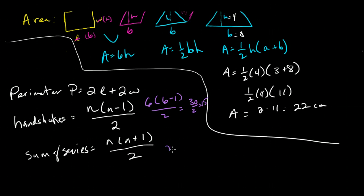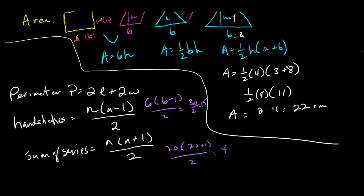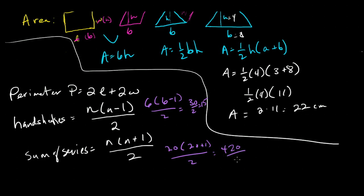And if I want to know the sum of the first 20 numbers, then I would do 20 times 20 plus 1 over 2, or 420 over 2, or 210.